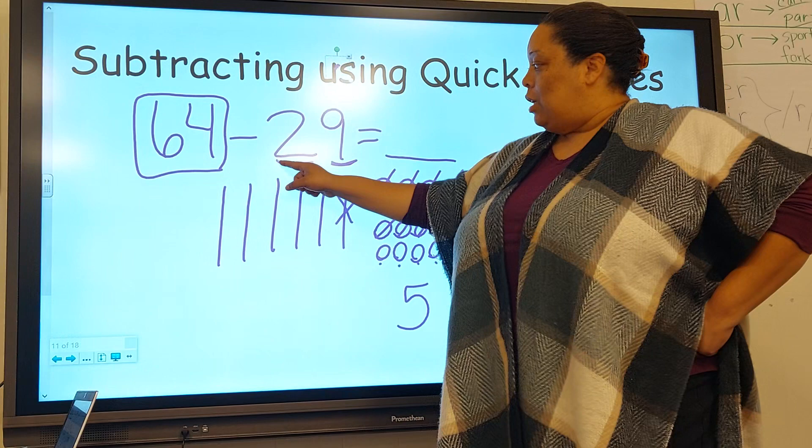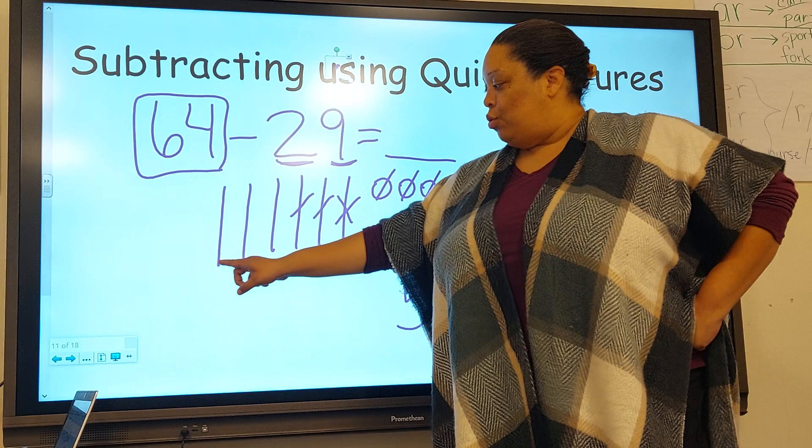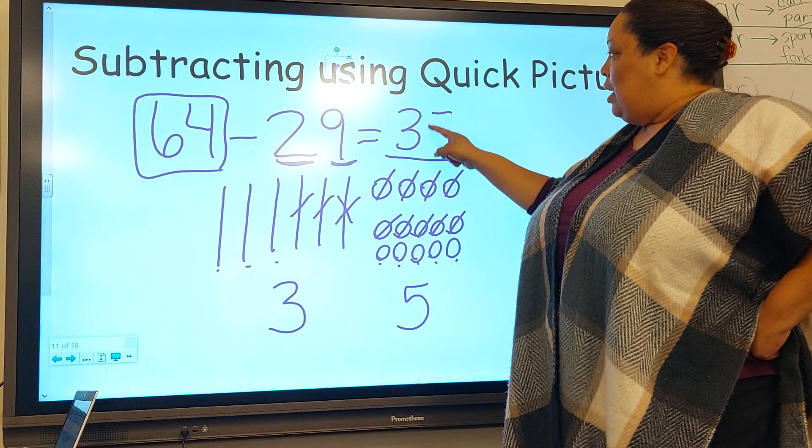Now how many tens do we need to take away? Two. Goodbye, goodbye. What's left? One, two, three - three. What's three tens and five ones? Thirty-five.